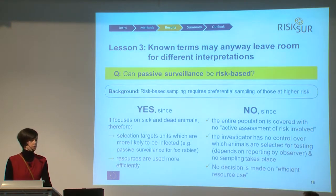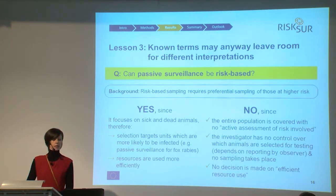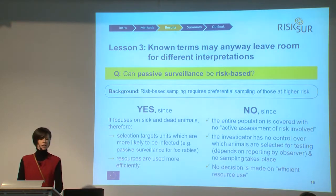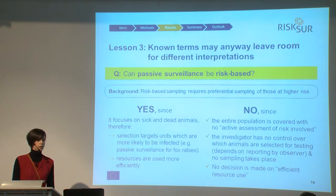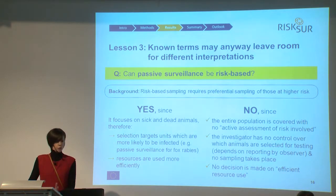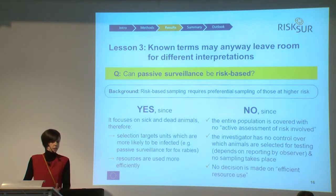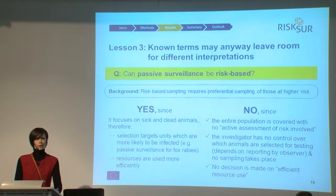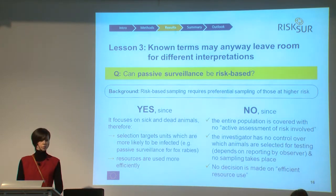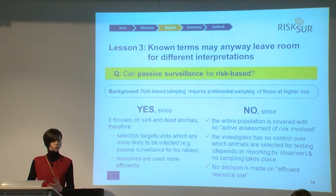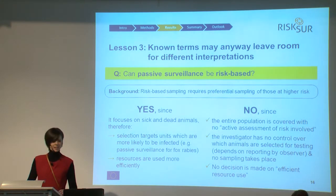Another tricky example is whether passive surveillance can be defined as risk-based — meaning focused on preferential sampling of units at higher risk. One could say yes: it focuses on sick and dead animals, which are more likely to be infected, so it is risk-based. But one could also argue that there is no active decision about sampling, no control over which units are sampled, and no active risk assessment involved. So this remains another open question.